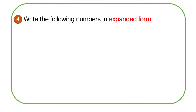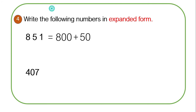In the next part, we need to write the following numbers in expanded form. Eight hundred and fifty-one is 800 plus 50 plus one. Four hundred and seven is 400 plus seven. I believe right now you can confidently differentiate between place value and digit value, and you can write numbers in expanded form.